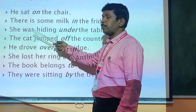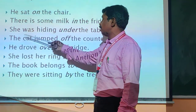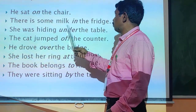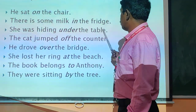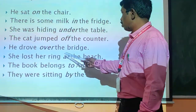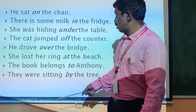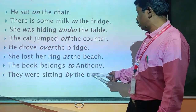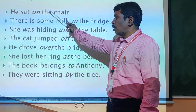Examples of simple prepositions: He sat on the chair — 'on' is the preposition, showing where he is sitting. There is some food in the fridge — 'in' is the preposition. She was hiding under the table — 'under' is the preposition. The counter of the room — 'of' is the preposition. He drove over the bridge — 'over' is the preposition. She lost her ring at the beach — 'at' is the preposition. The book belonged to — 'to' is the preposition. They were sitting by the tree — 'by' is the preposition.